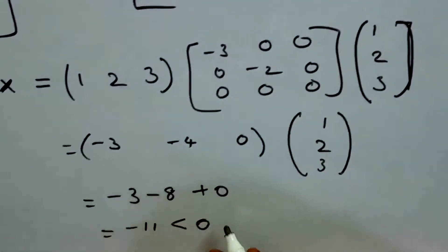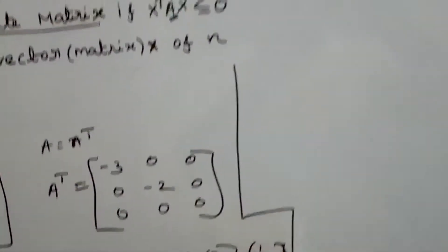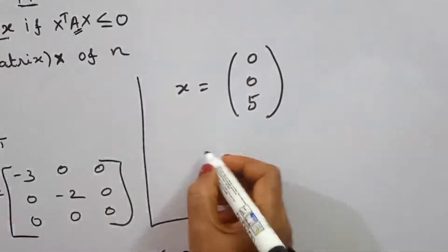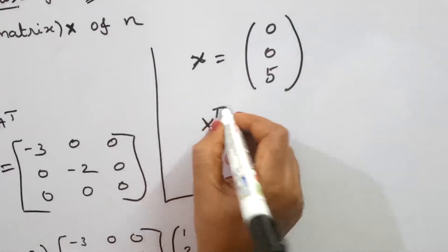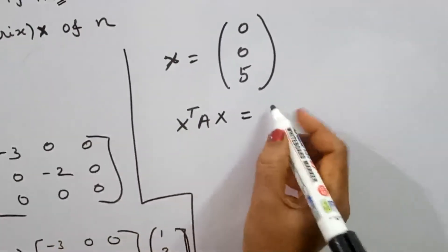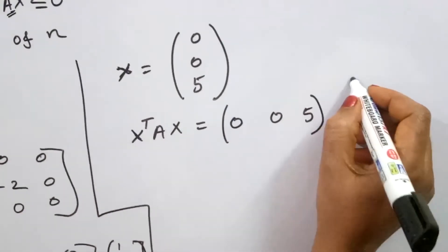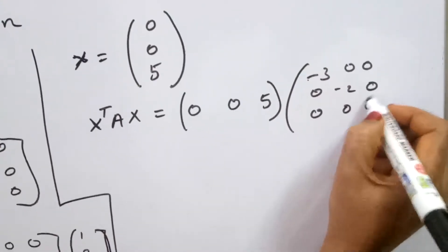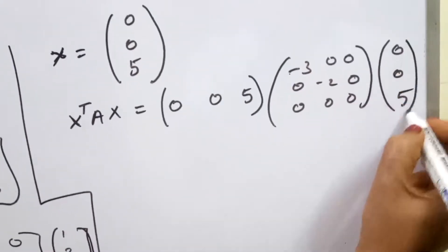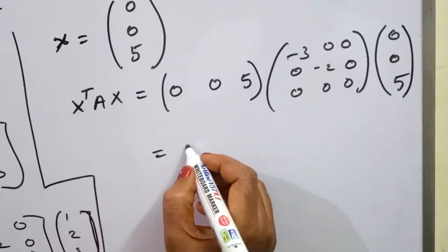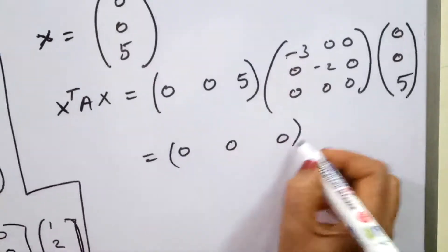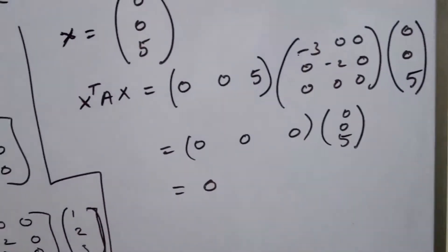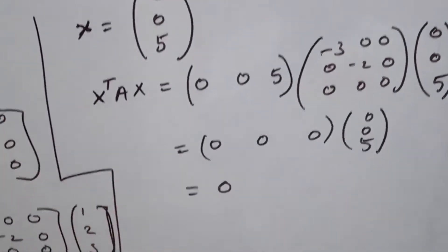Next, we choose the column vector x equal to [0, 0, 5]. The product AX with matrix A (minus 3, 0, 0 / 0, minus 2, 0 / 0, 0, 0) and x = [0, 0, 5] gives AX = [0, 0, 0]. So x transpose Ax equals 0.